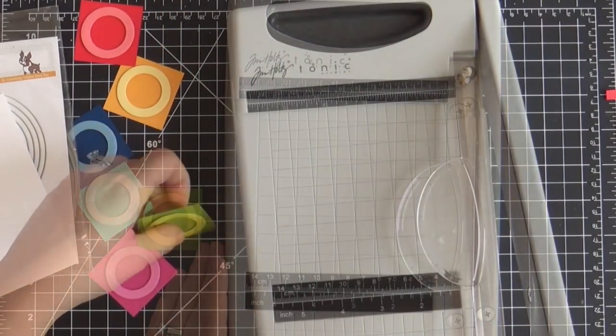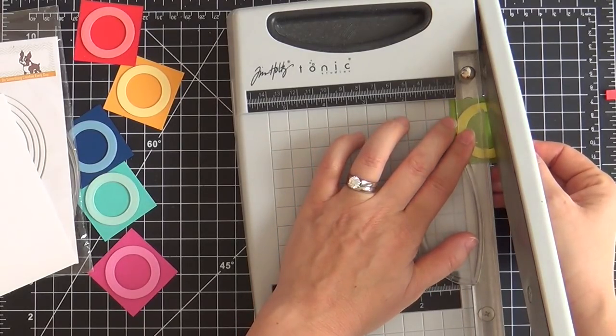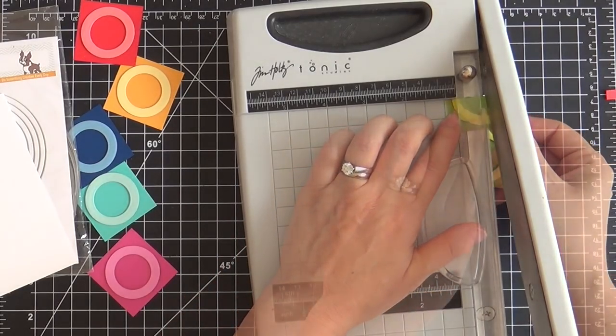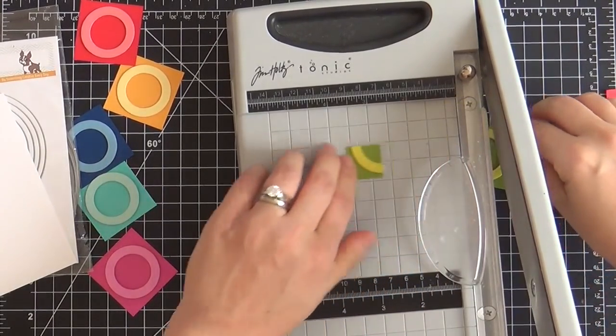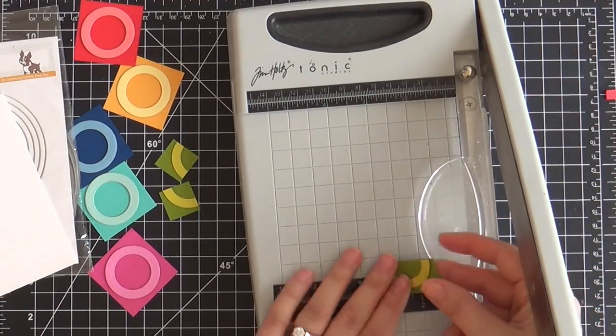Right about now is where she starts to go off the rails because I need to cut each one of these squares into fourths. So every square is going to become four little pieces. You need to find your halfway measurement.